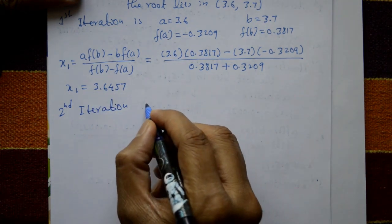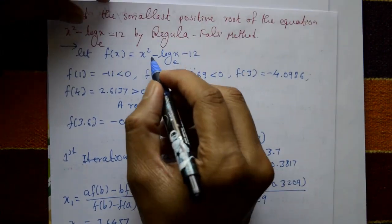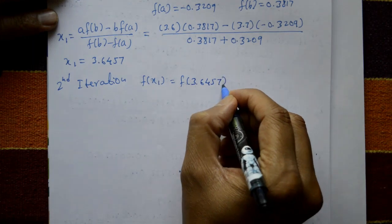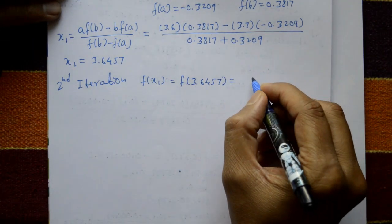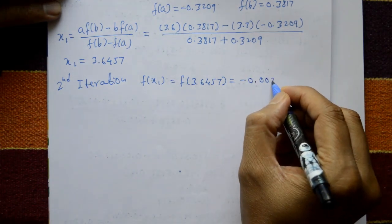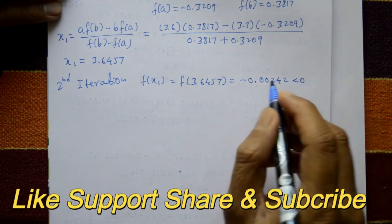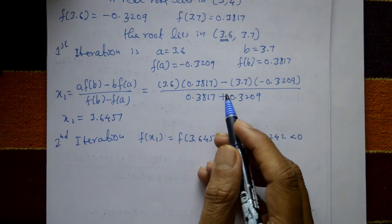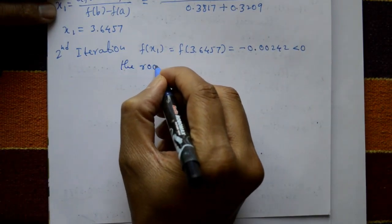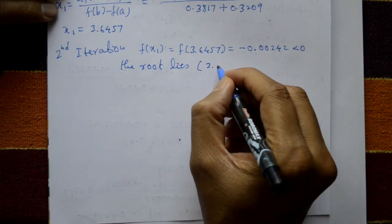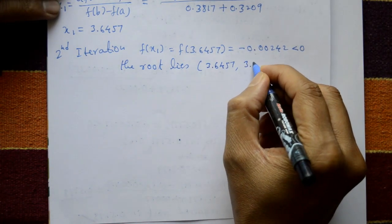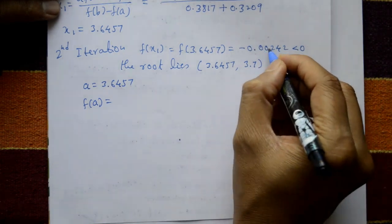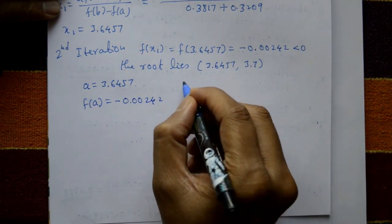Second iteration: substitute x1 = 3.6457 into f(x). f(3.6457) = minus 0.00242, which is less than zero. Since this is negative, replace the value of a = 3.6 with x1. Now a = 3.6457 and f(a) = minus 0.00242.